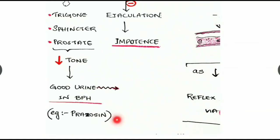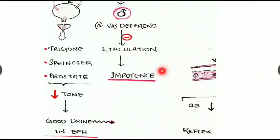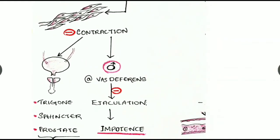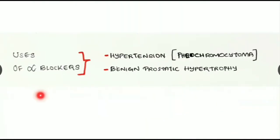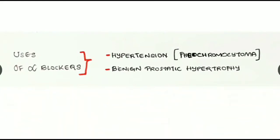This reduced tone is more useful in BPH patients — benign prostatic hypertrophy — commonly known as prostate disease in men. The drug used for this is prazosin. Inhibiting smooth muscle contraction in the genitourinary system, especially in the vas deferens, inhibits ejaculation in males, resulting in impotence. Uses of alpha blockers include hypertension, pheochromocytoma, and BPH.